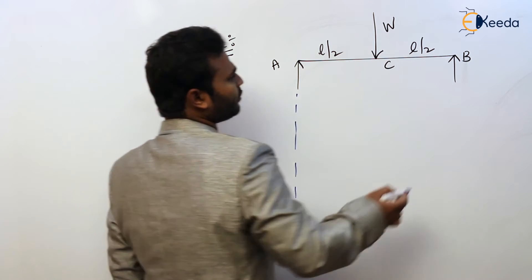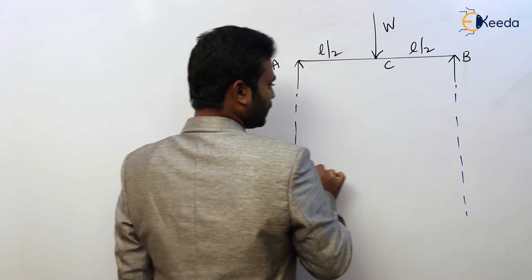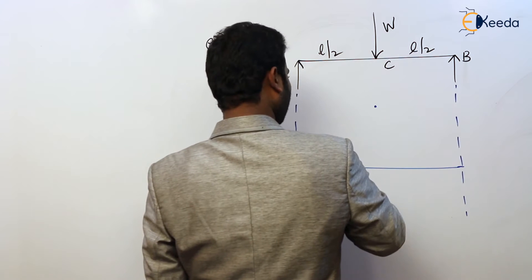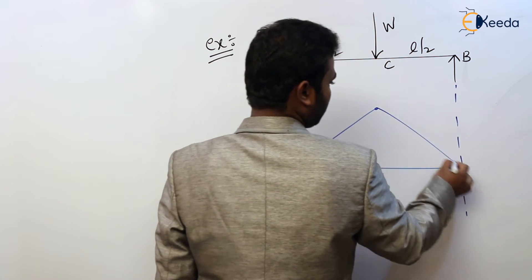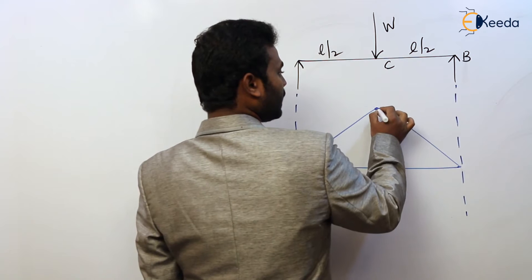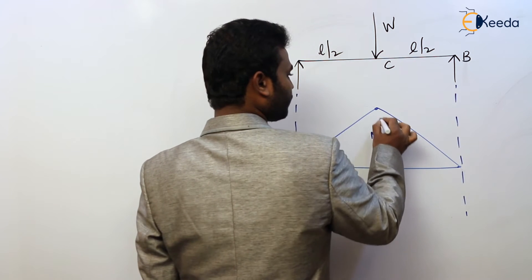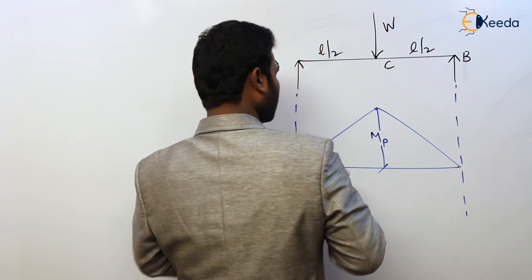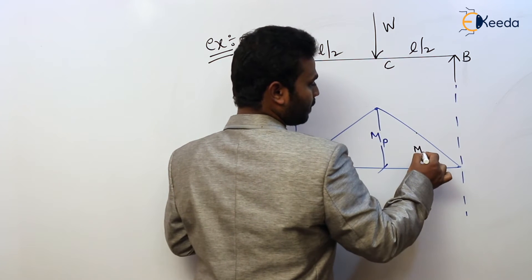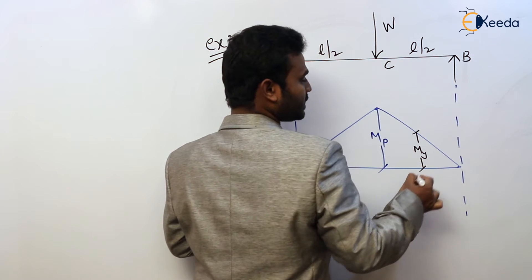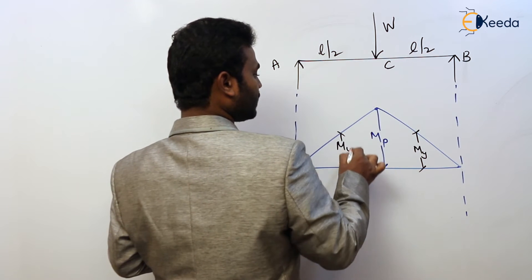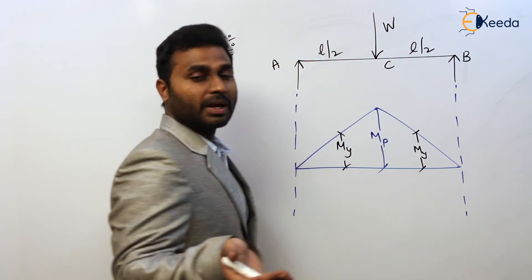The bending moment diagram for this case is triangular with the maximum value at the center. Now, as we discussed, the beam progresses through states: first elastic state, later yield state, after that semi-plastic state, and then plastic state.